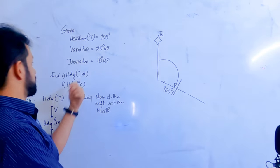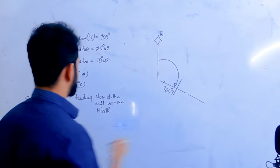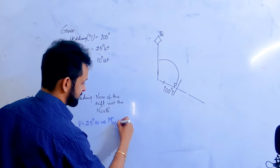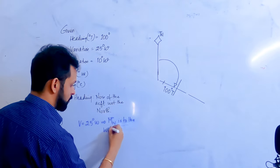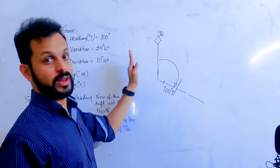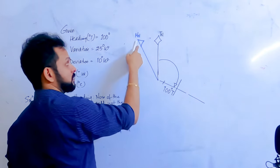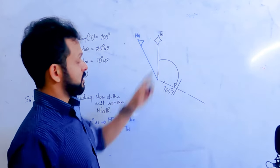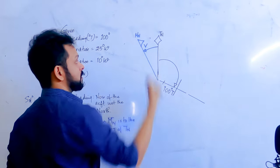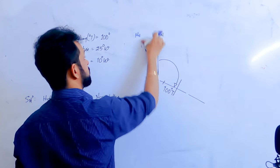We need to find magnetic heading, for which we have variation of 25 degrees west. 25 degrees west variation means magnetic north is to the west of true north. West is to your left, so magnetic north is to the left of true north. Measuring from true north towards magnetic north gives us the angle called variation — 25 degrees west.